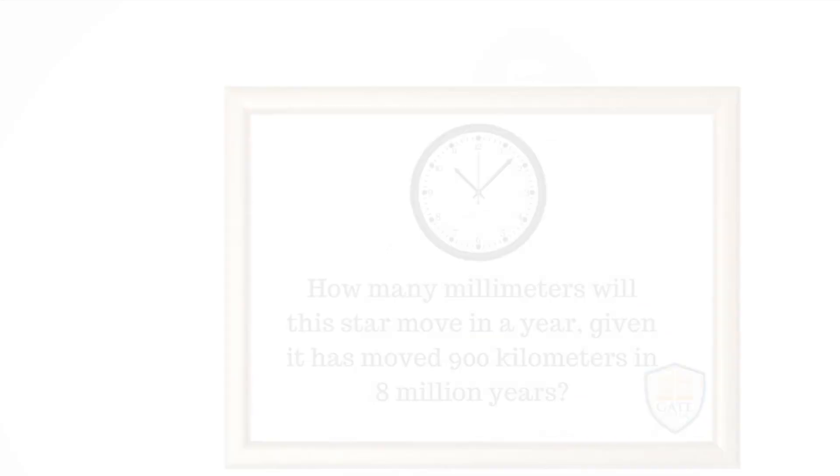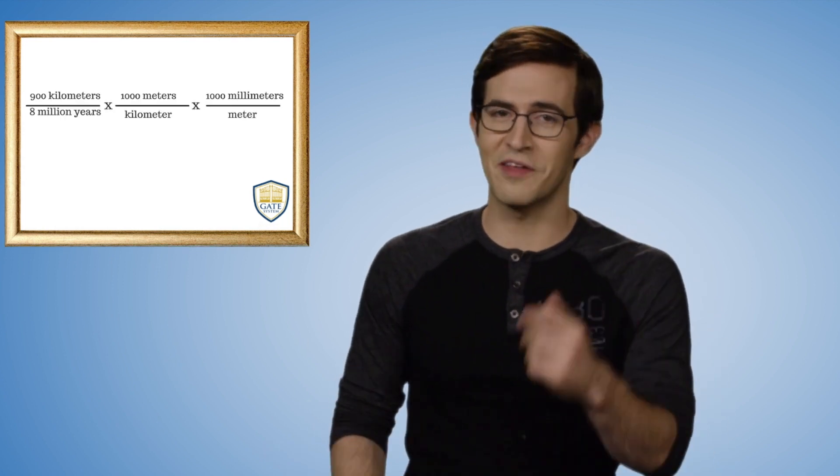How many millimeters will a star move in a year, given that it has moved 900 kilometers in 8 million years? This is very easy using dimensional analysis. We want to go from kilometers per millions of years to millimeters per year. We start on the left with kilometers per year, then change kilometers to meters, and meters to millimeters. Watch how the units cancel out, and you're left with millimeters per year. That's dimensional analysis.